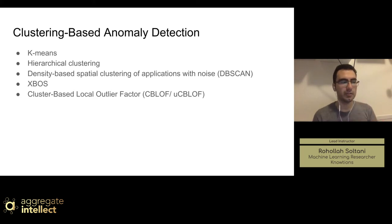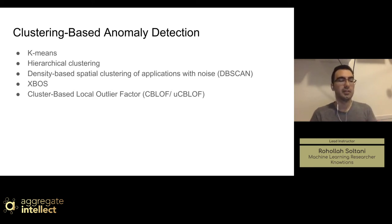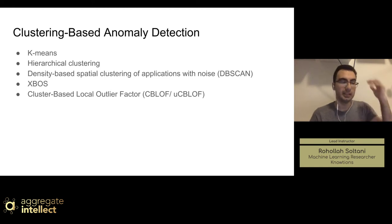The anomaly score is then calculated by setting a threshold for the size of a cluster or the distance to the cluster centroid. If a cluster has fewer samples than the threshold value, they are marked as anomaly. Or if a data point's distance to the center of the cluster exceeds the threshold, you can flag it as anomaly.